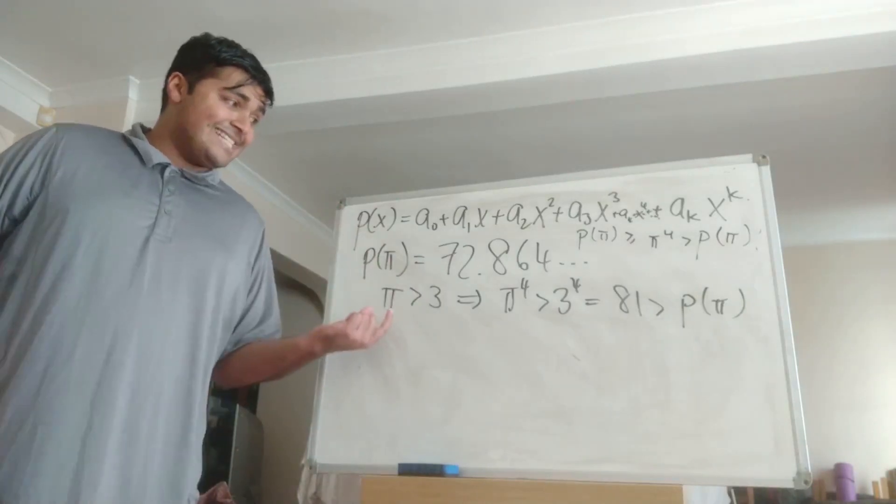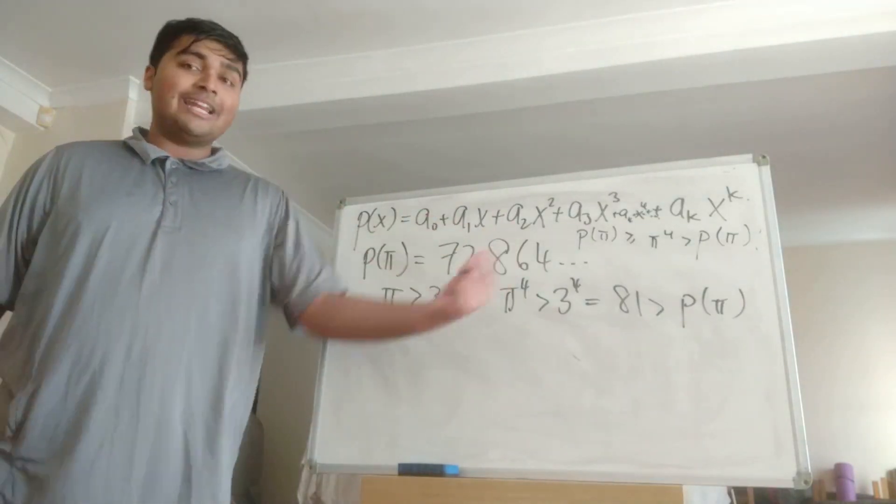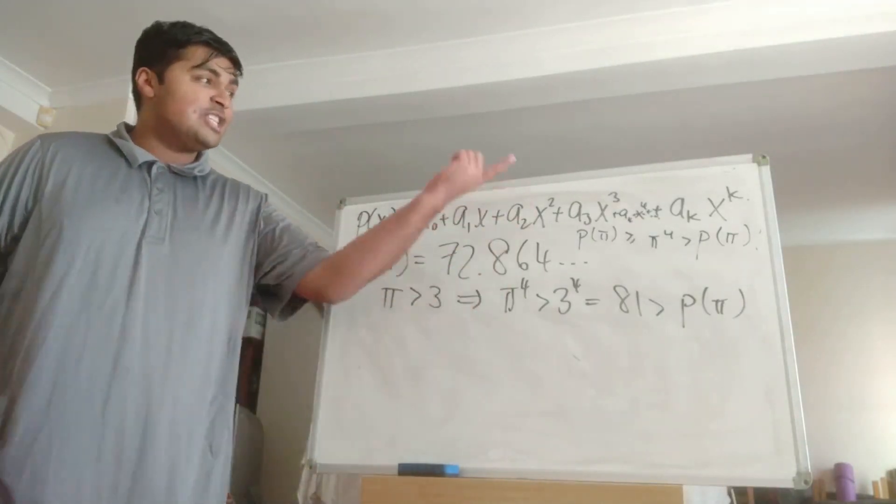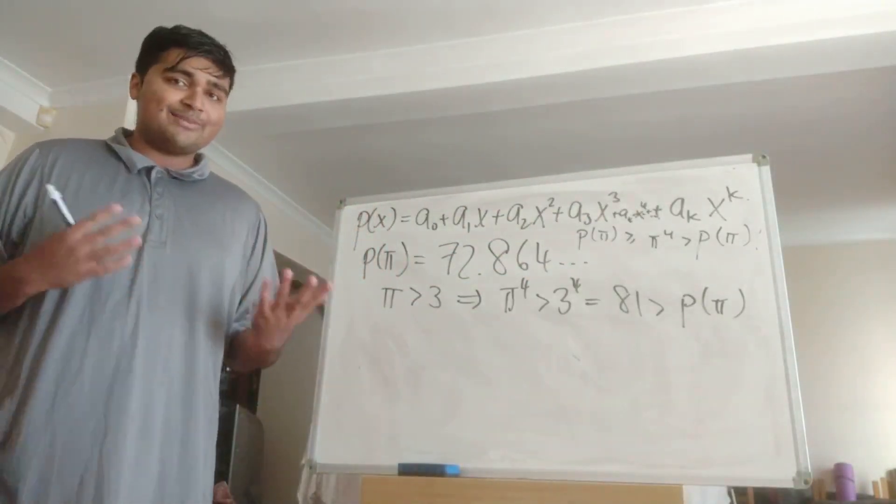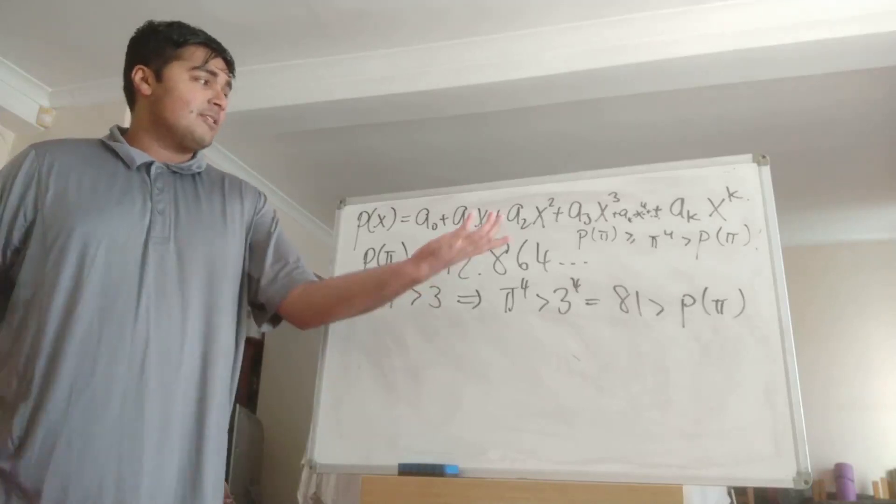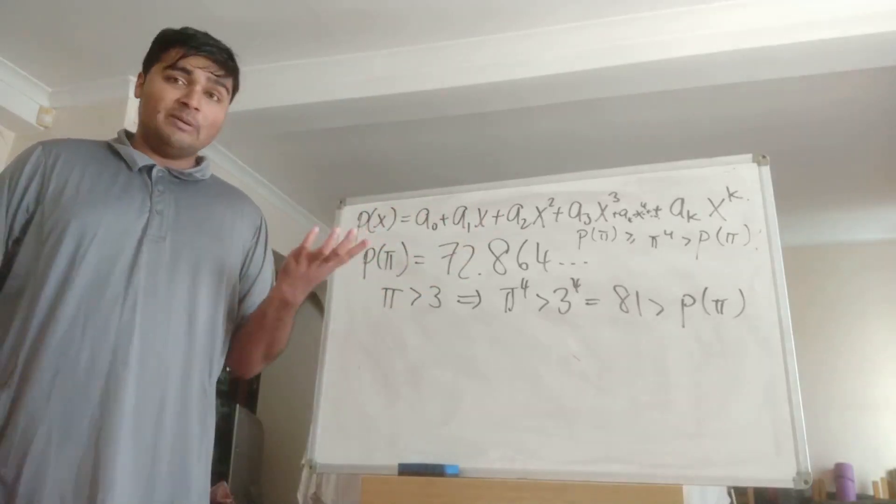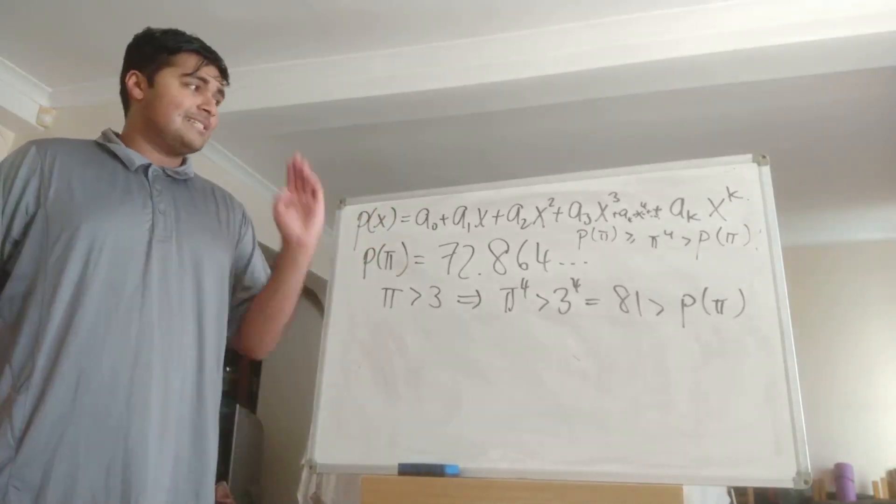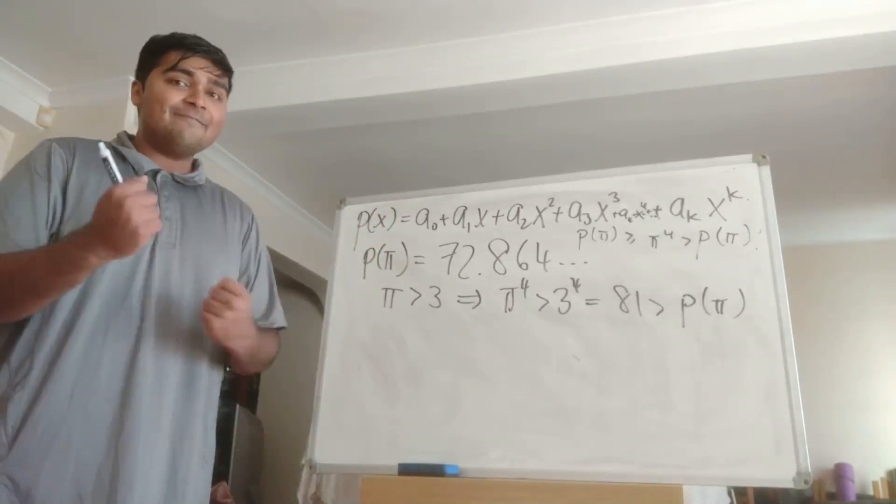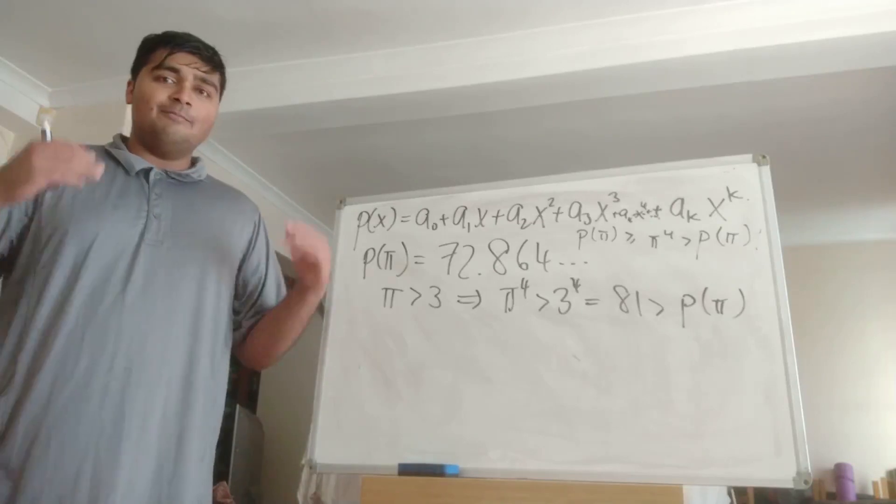So that tells us then in this case when we have that P(pi) is 72.864 that P is just a cubic, so anything from degree 4 onwards must be zero otherwise we'll end up in a contradiction. So that will tell us that P is a cubic but we're still not done yet because there still are an infinite number of cubics because the coefficients can take an infinite number of values.